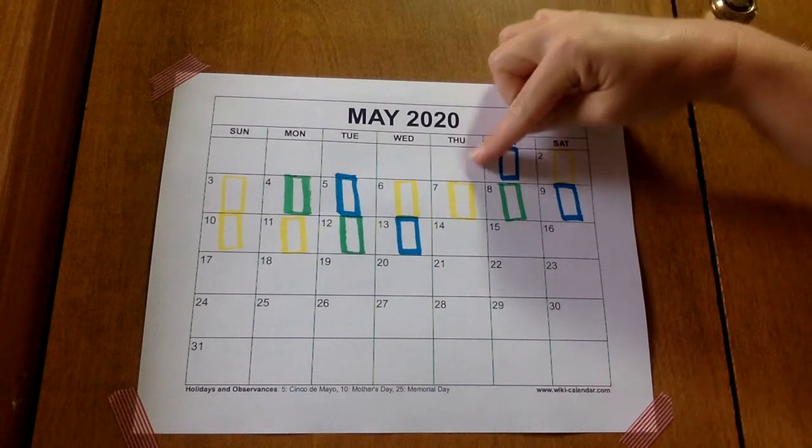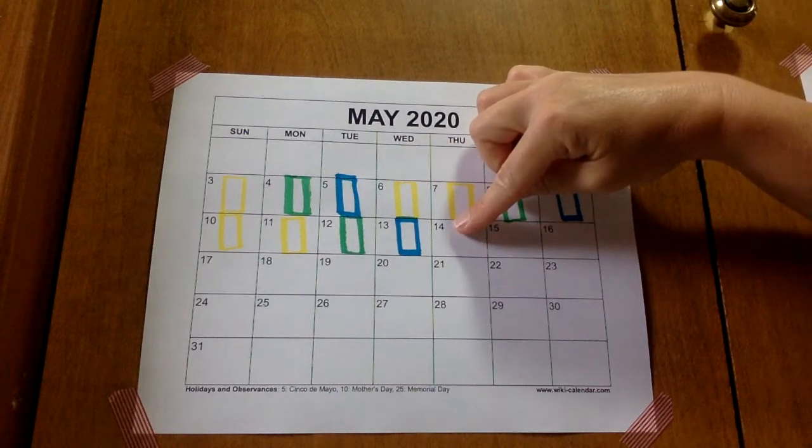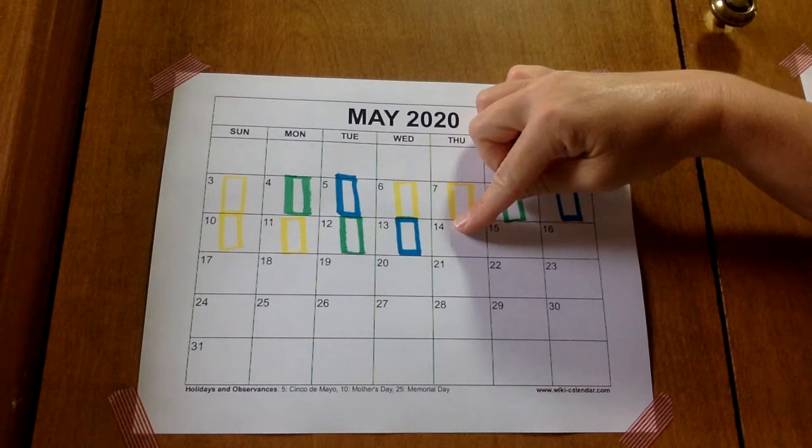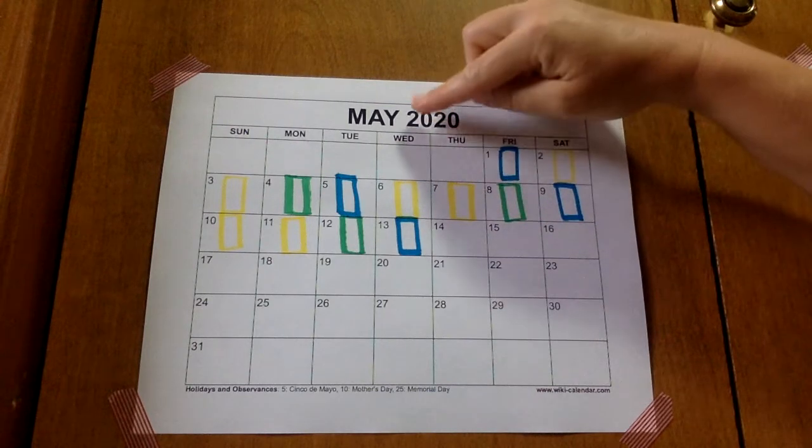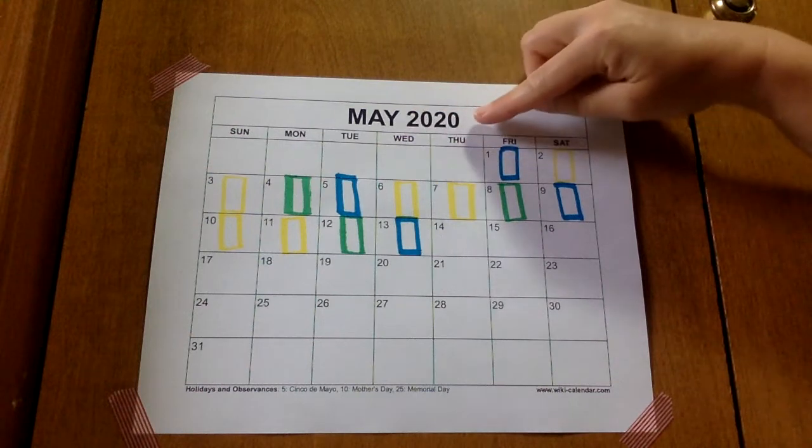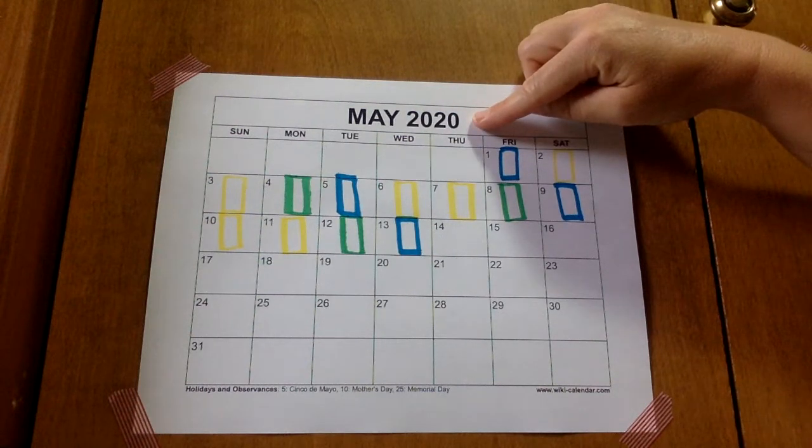Today is Thursday and it is the 14th. A 1 and a 4 makes number 14. The month is May and the year is, yes, 2020.